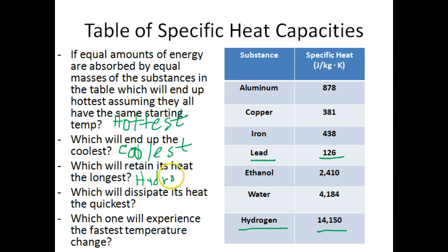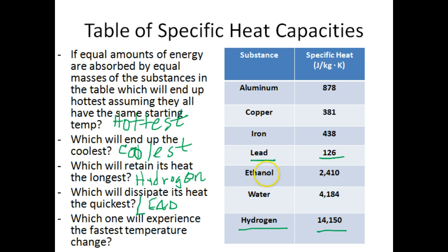So hydrogen will retain its heat the longest. Which will dissipate its heat the quickest? That will be the substance with the lowest specific heat capacity — so lead is going to release its heat the quickest. And which will experience the fastest temperature change? If equal amounts of energy are absorbed by equal masses, the one with the lowest specific heat capacity will experience the fastest temperature change, which is again lead.